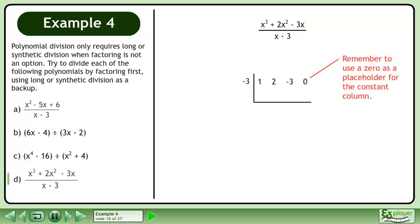Remember to use a 0 as a placeholder for the constant column. Bring down the 1. 1 times -3 equals -3. Subtract. 2 minus -3 equals 5. 5 times -3 equals -15. Subtract. -3 minus -15 equals 12.